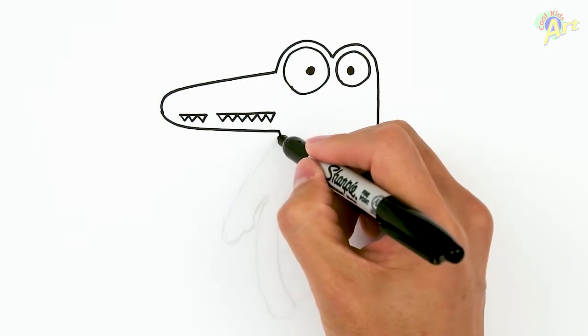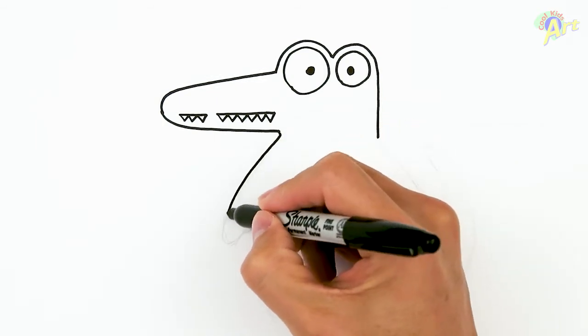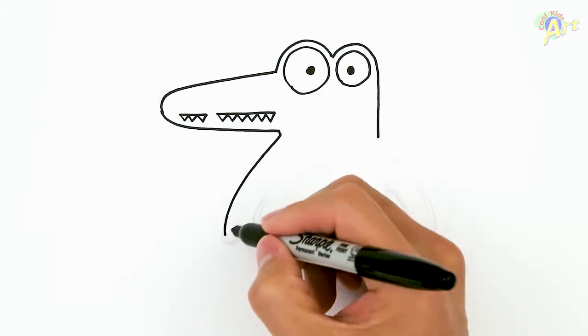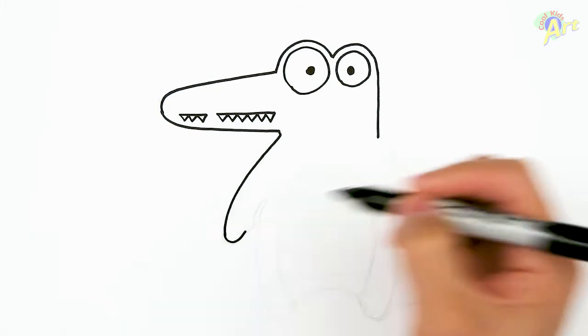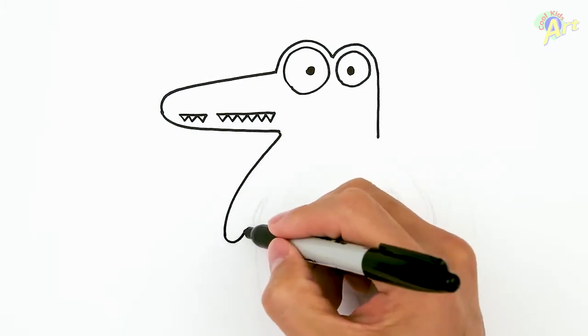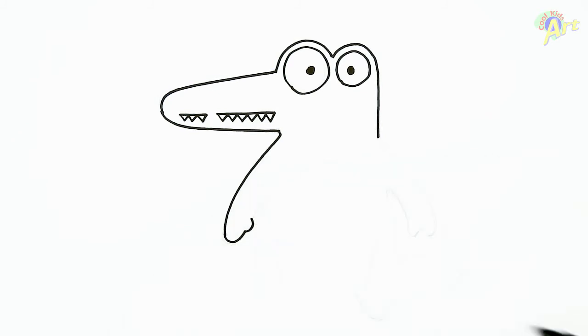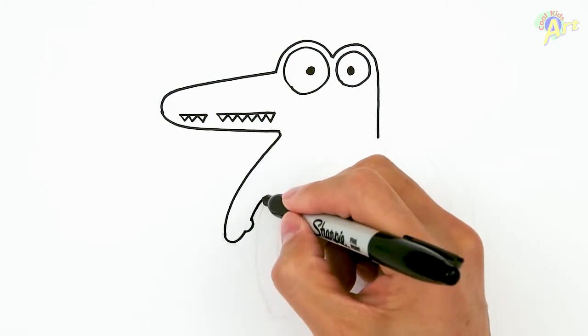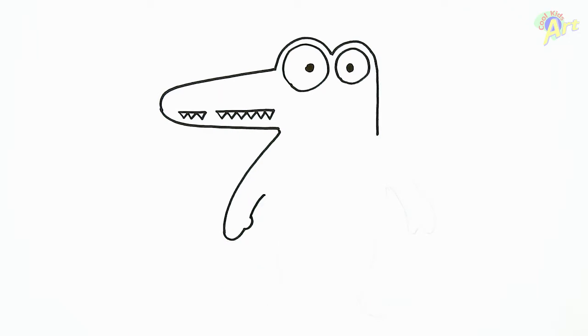So now we're going to draw the arm. We're going to come down all the way out, curve it, just give it a little bit of a thumb and curve it back up.